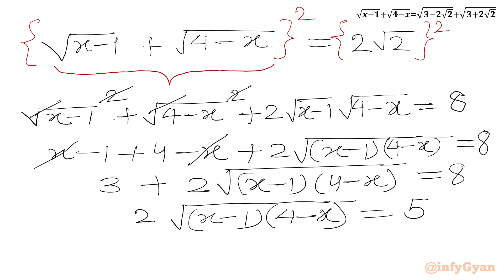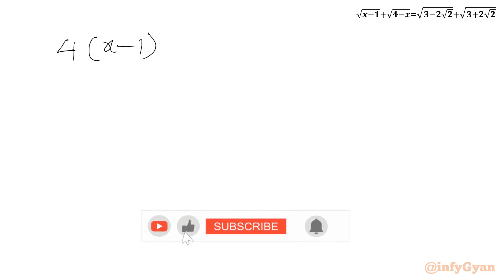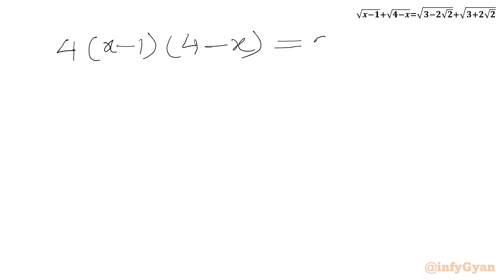Now we will square both sides again to remove the square root from the left hand side. So squaring both sides: 2 squared is 4, and the square root and square cancel. We get: 4 times (x minus 1) times (4 minus x) equals 5 squared, which is 25.